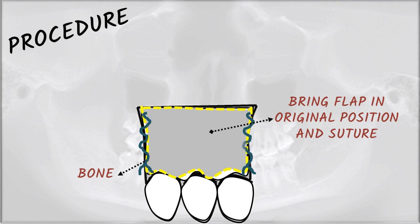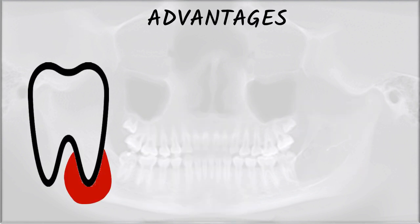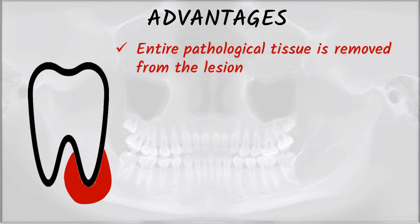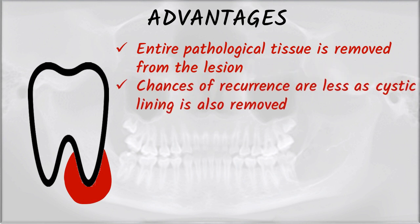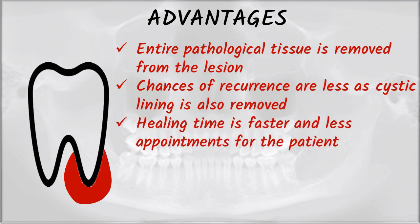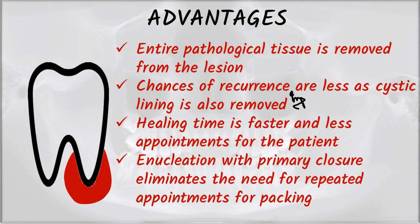Advantages of enucleation: First, the entire pathological tissue is removed from the lesion. Chances of recurrence are less, as the cystic lining is also removed. Healing time is faster with fewer appointments for the patient. Enucleation with primary closure also eliminates the need for repeated appointments for packing.